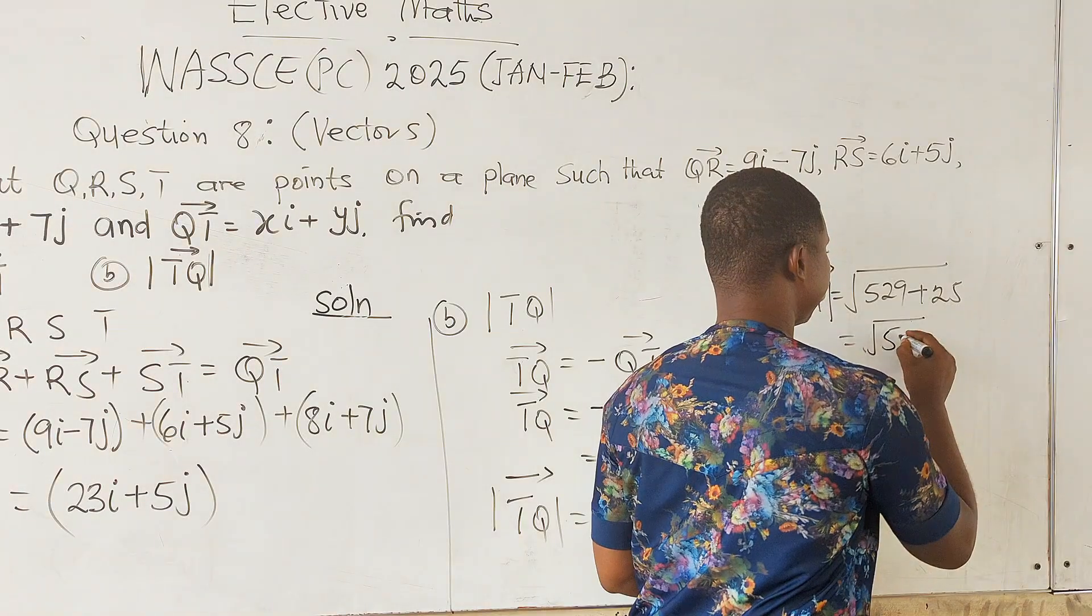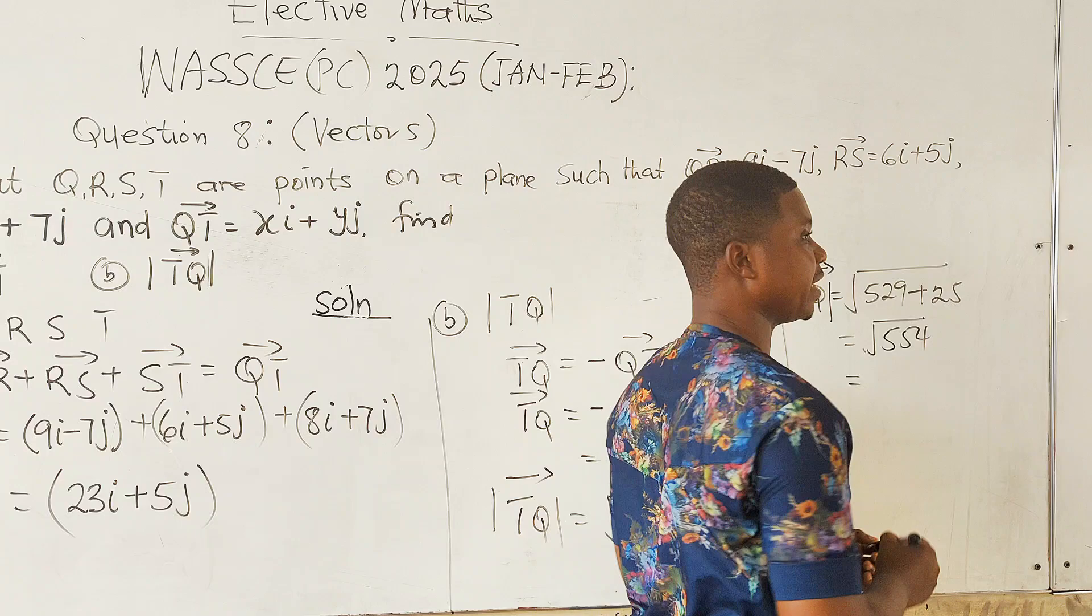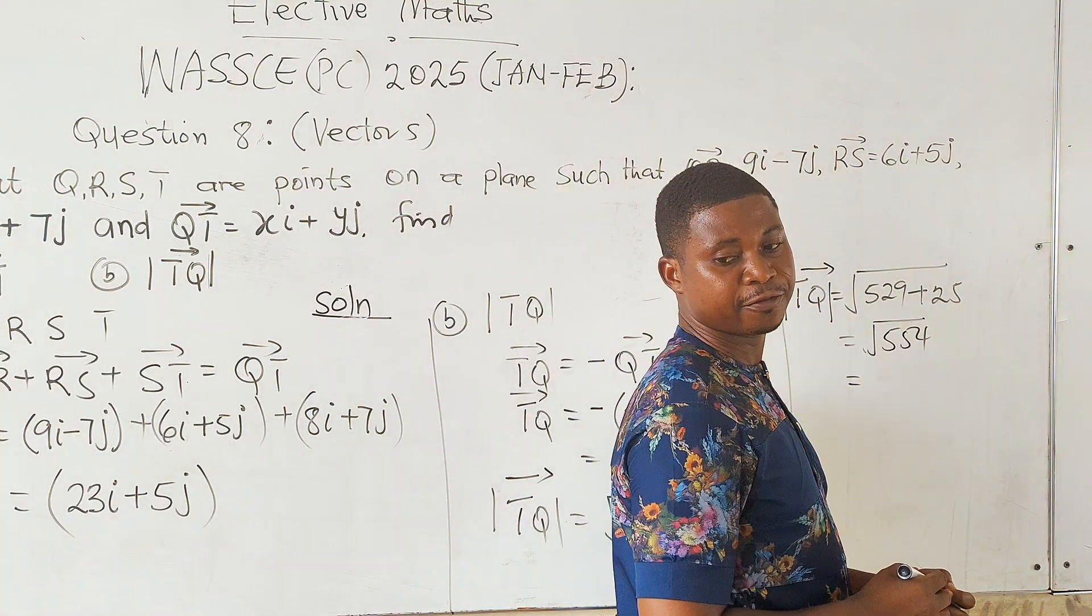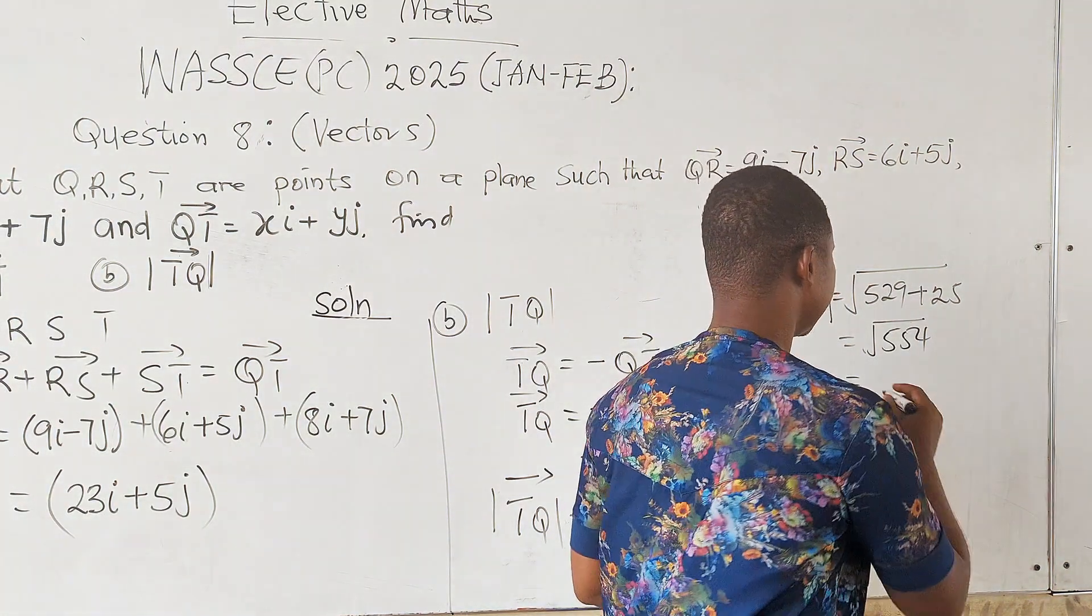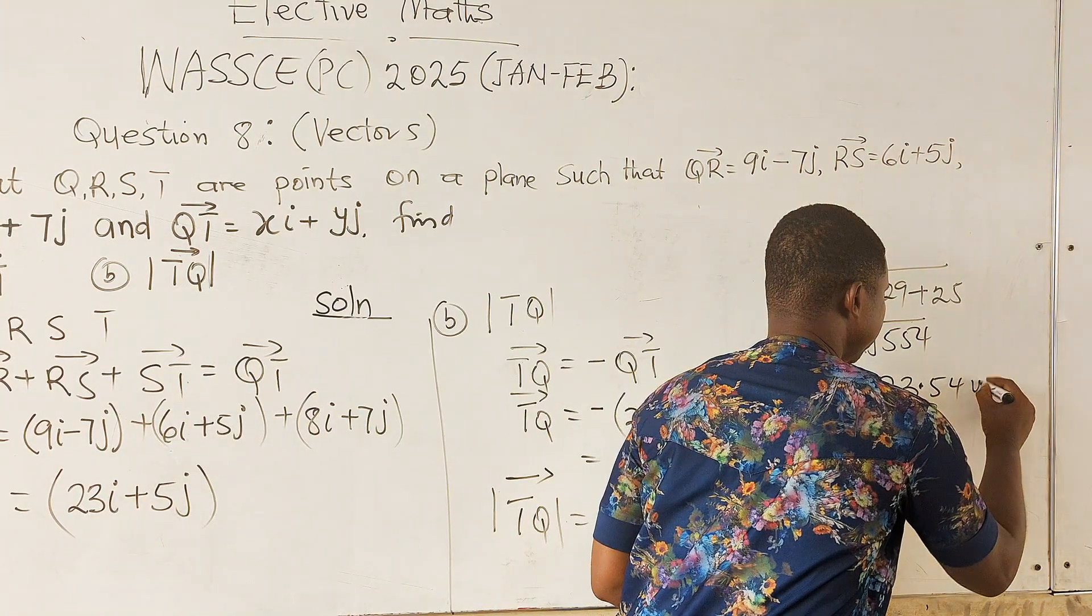So |TQ| is equal to square root of 529 plus 25. And finding the square root of 554 will give us 23.54 units.